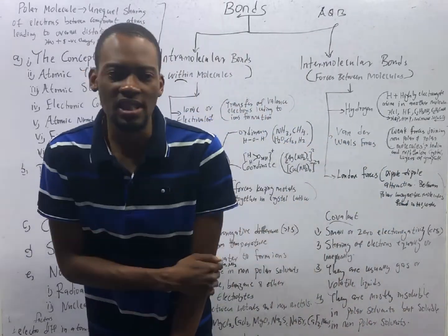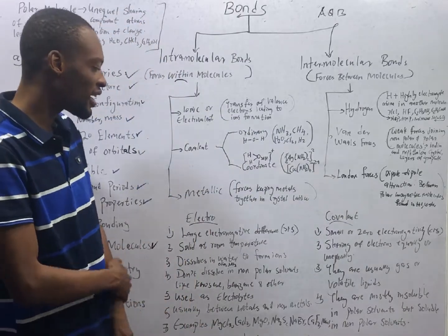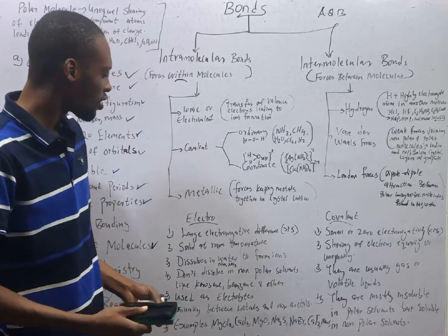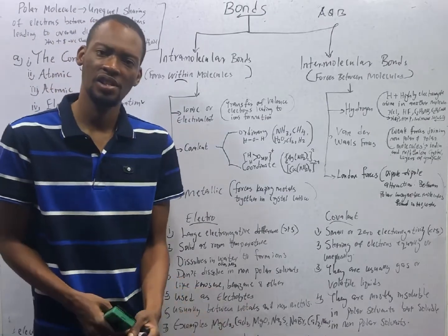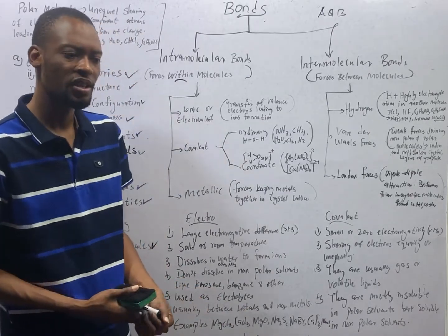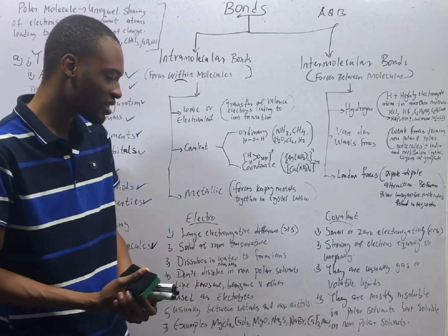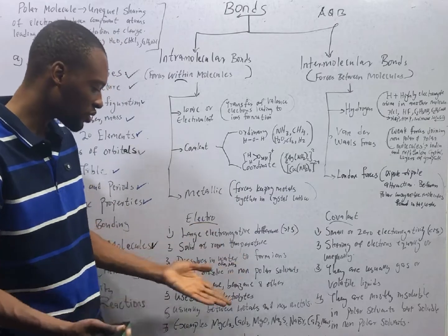Then kerosene, benzene, ether, they are non-polar. Since electrovalent compounds dissolve in polar solvents, it means they don't dissolve in non-polar solvents like benzene, ether, or kerosene.